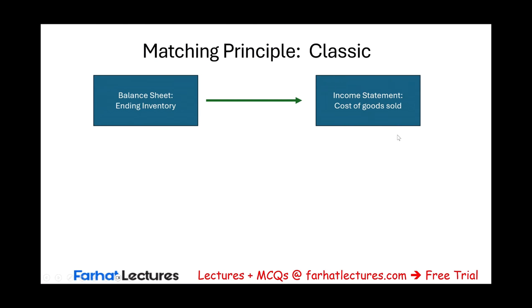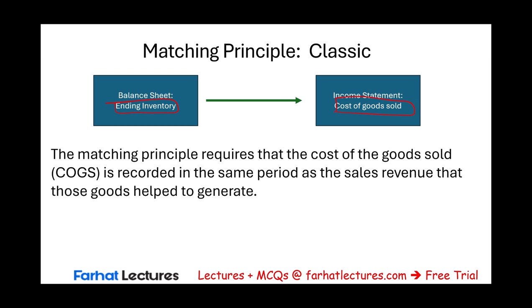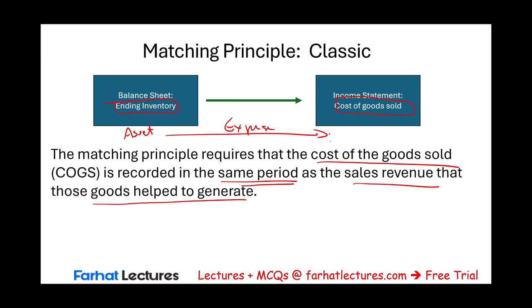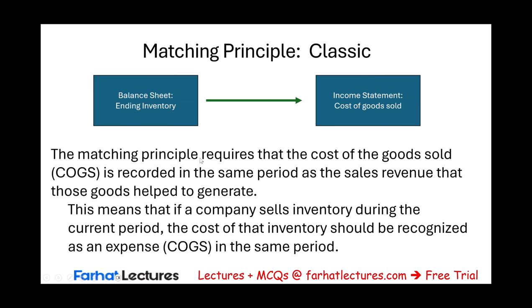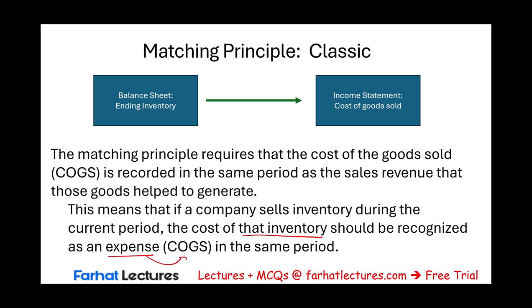I'm going to start this session by revisiting the matching principle. When it comes to ending inventory and cost of goods sold, the matching principle is a classic example. The matching principle requires that the cost of goods sold is recorded in the same period as the sales revenue that those goods help generate. When we buy inventory to sell, first it's recorded as an asset, then it's expensed when sold — the inventory becomes cost of goods sold.